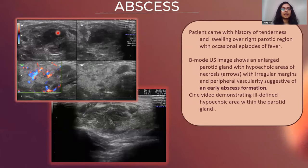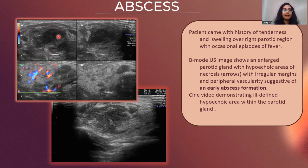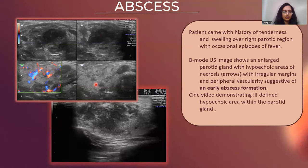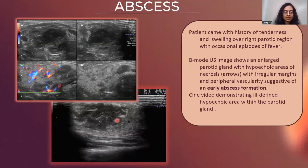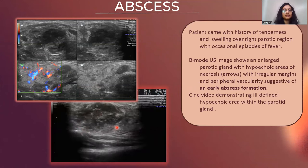Moving on to the next cases, we had a patient with history of tenderness and swelling over the right parotid region with occasional episodes of fever. The enlarged parotid gland showed hypoechoic areas of necrosis within and appeared ill-marginated, showing peripheral vascularity on color Doppler studies. We can see the ill-marginated hypoechoic area within the gland. All of these were suggestive of early abscess formation.